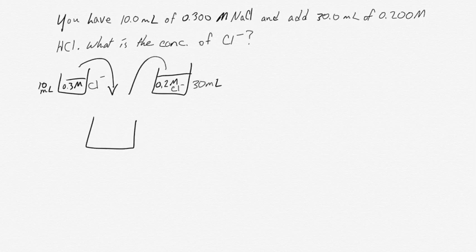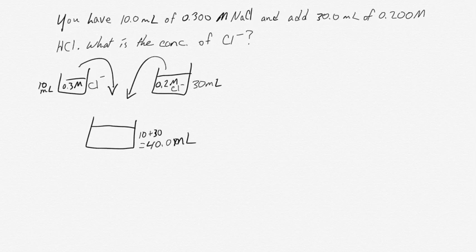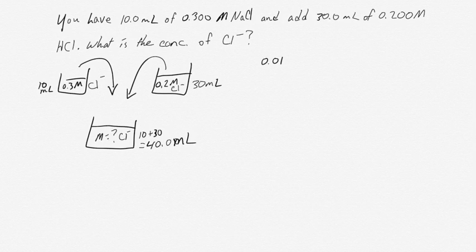When we mix those solutions together, the chloride from one and the chloride from the other are poured into a single new container. We now have 10 mL plus 30 mL, so we have 40 milliliters of solution with an unknown concentration. What we can do is find the number of moles from each original solution, add those moles together, and then divide by the total volume.